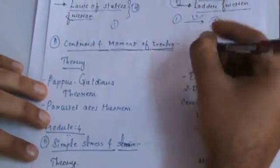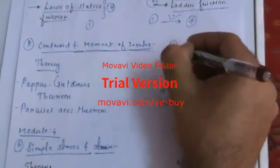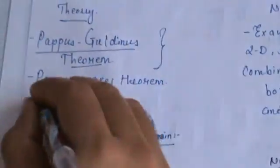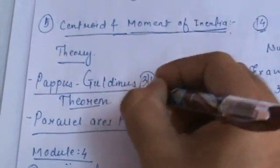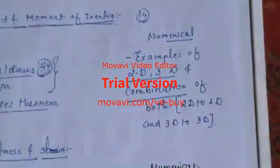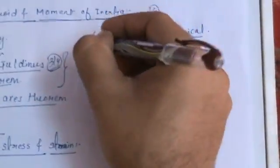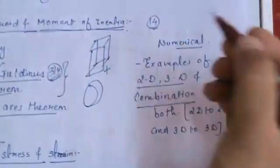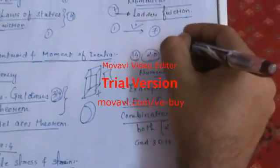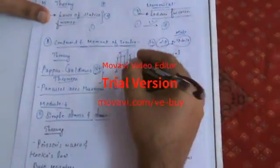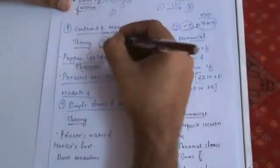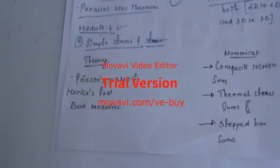Also in Module 3 is the chapter on centroid and moment of inertia, which can help you pass the subject because it consists of 14 marks and is very easy to score 14 out of 14. There are only 2 theories: Pappus-Guldin's theorem and the parallel axis theorem. The examples involving 2D and 3D combinations — finding centroid and moment of inertia for rectangular, circular, square, and combined sections — are worth 7 to 14 marks minimum. With a few formulas, you can easily score 7 to 14 marks.